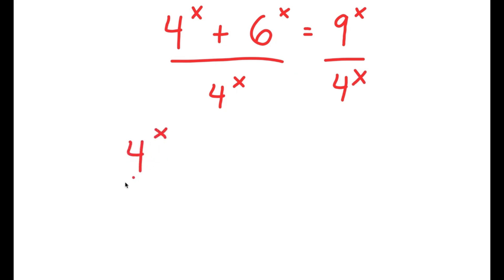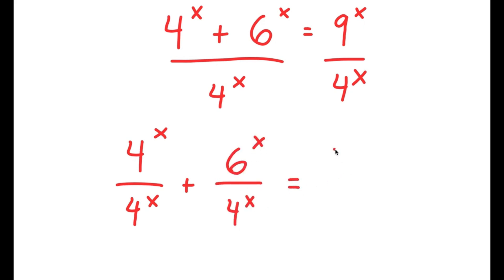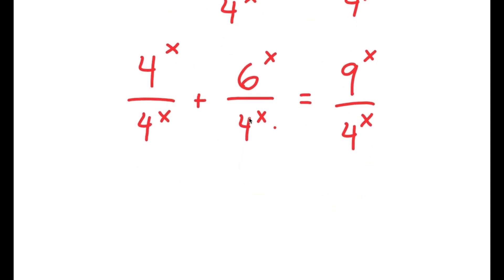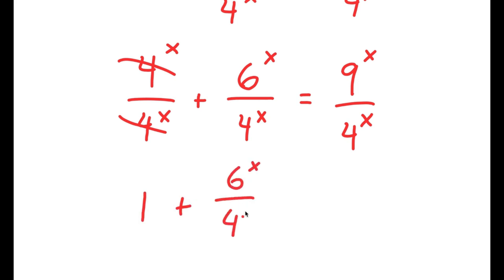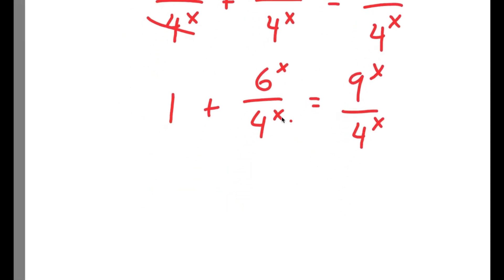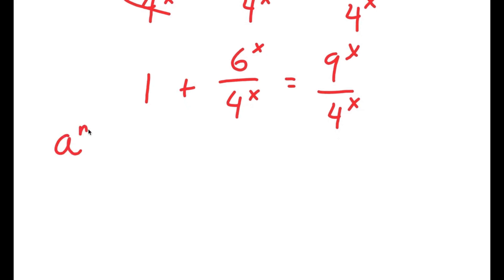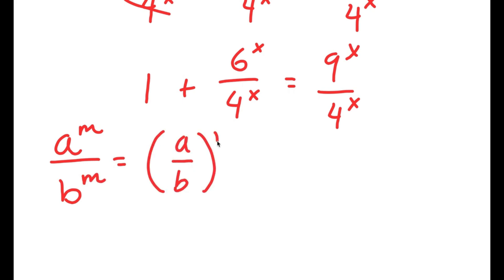So I get 4^x over 4^x plus 6^x over 4^x is equal to 9^x over 4^x. The 4^x terms cancel, giving 1 plus 6^x over 4^x equals 9^x over 4^x. Using the property that a^m over b^m equals (a/b)^m,